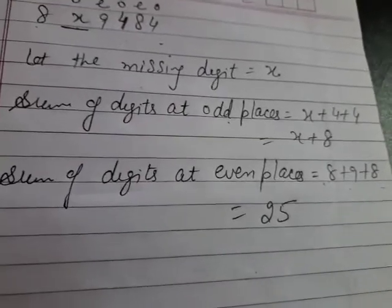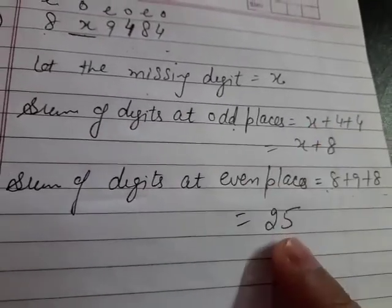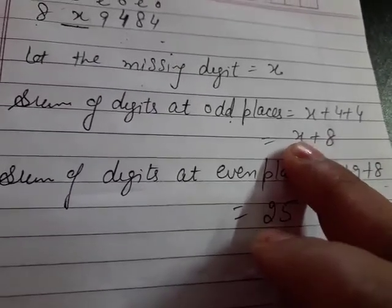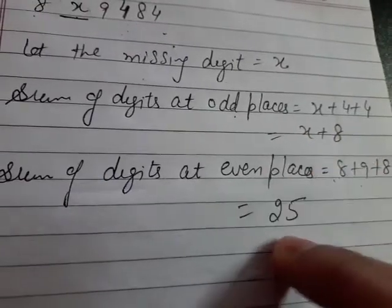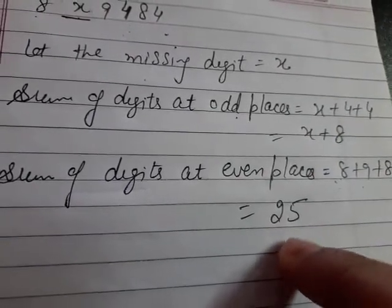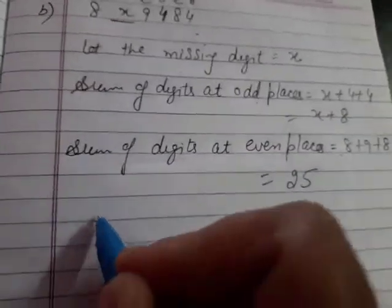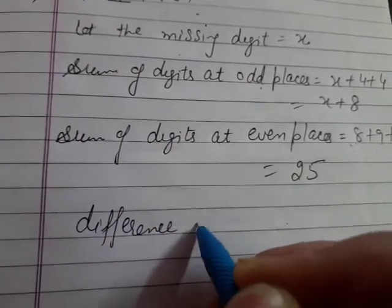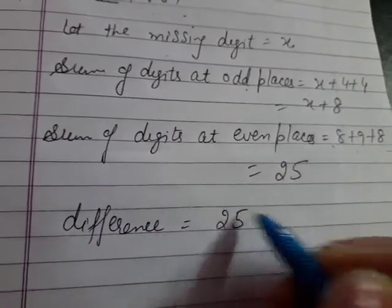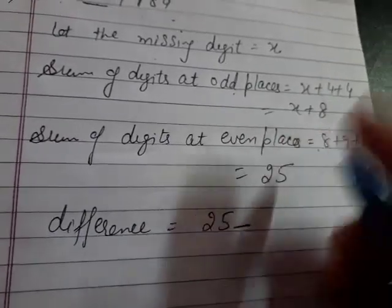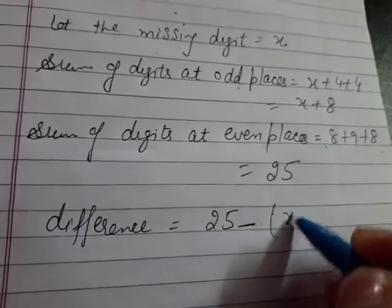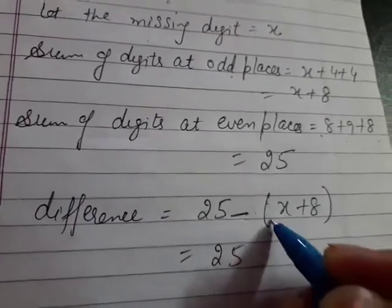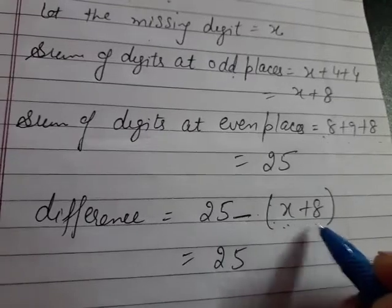Now between these two, even or odd, which sum is larger? Even is larger because in place of x, what is the largest digit we can put? Only 9. 9 plus 8 is 17, which is less than 25. So now after that, we will take the difference. We subtract the smaller sum from the larger sum. 25 minus. At odd places there are two terms, so we keep them in brackets.